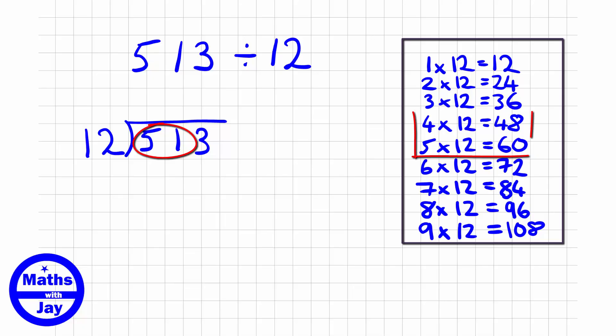And then looking at my times table I can see that 4 times 12 is 48. So that gives me the answer of 4, which I need to remember to put above the 1 and not above the 5, because it's the 51 that 12 goes into, doesn't go into 5. So it goes into 51.